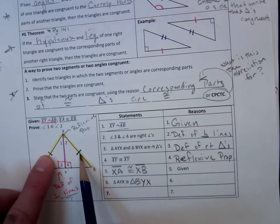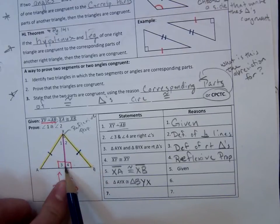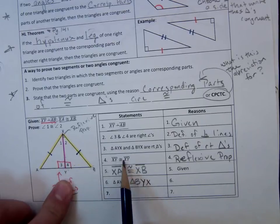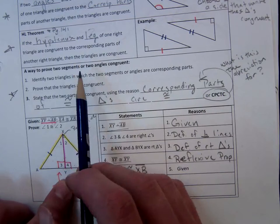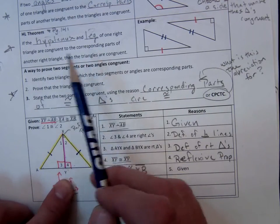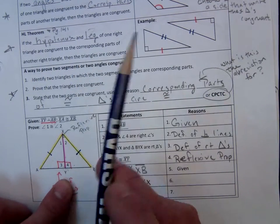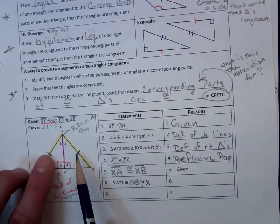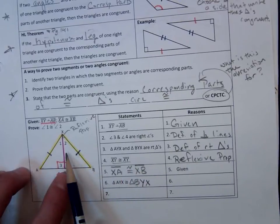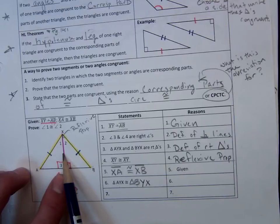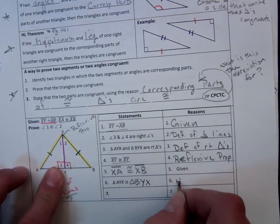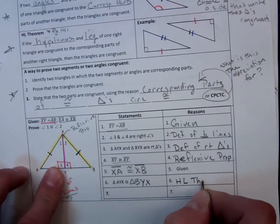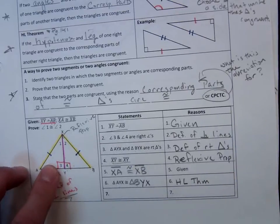The hypotenuses are the two yellow legs, and the pink leg here, well, that's congruent for both of them. We stated that in number four. Of one right triangle are congruent to the corresponding parts of another right triangle, then those triangles must be congruent. So, we have hypotenuses that are congruent, a leg on each triangle that's congruent, and they are both right triangles, so we can use the hypotenuse leg theorem to state that these two triangles are, in fact, congruent.